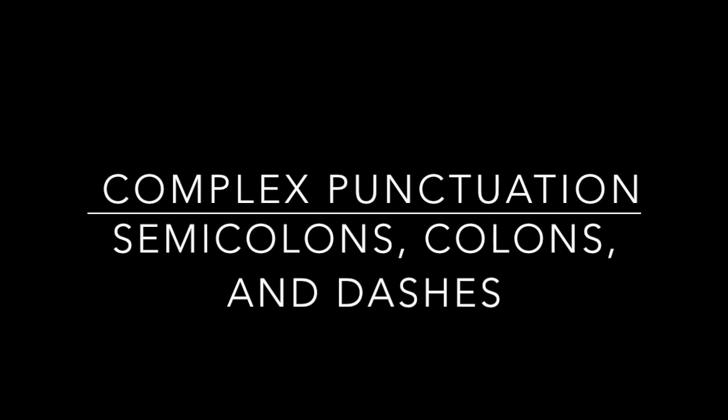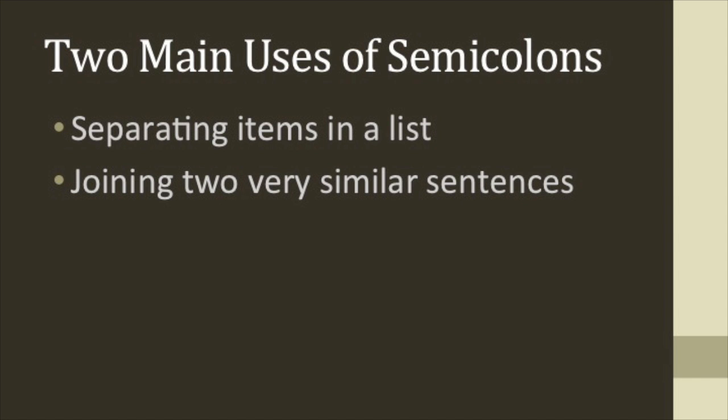First, let's take a look at semicolons. There are two main uses for a semicolon: to separate items in a list, and to join two similar sentences. Let's talk about them in a list. Normally, when you create a list, you would separate the items with commas, like this.